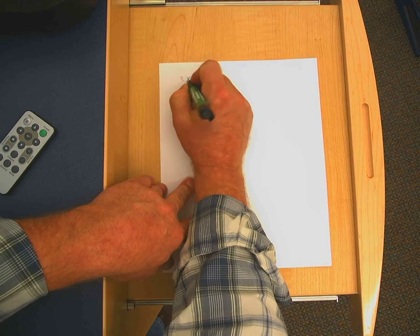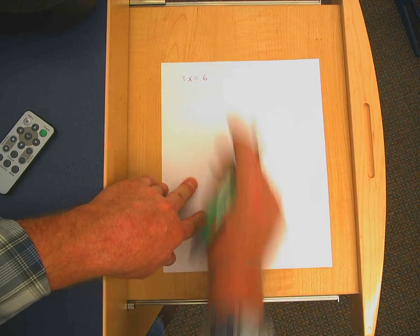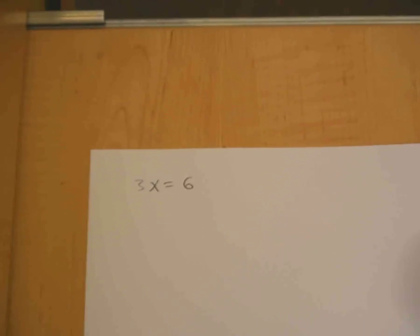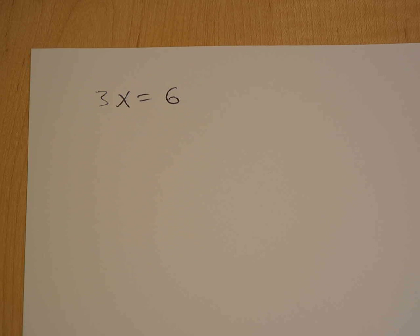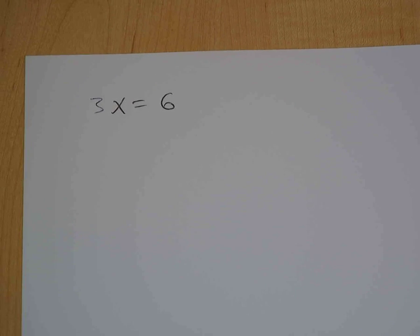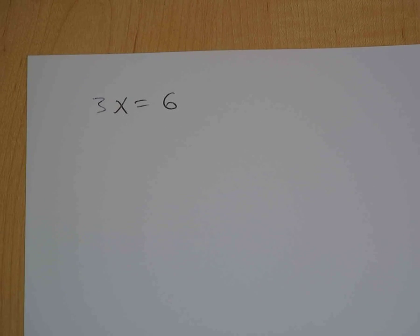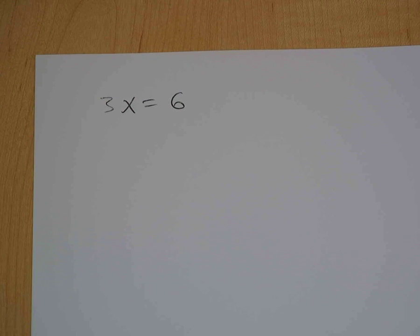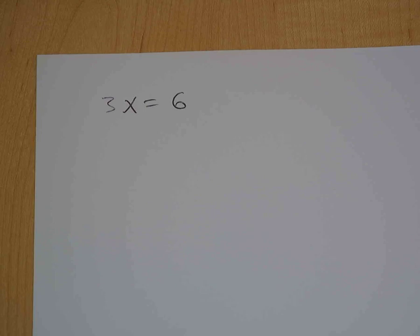Today we're going to learn how to solve simple algebraic equations. In this example we have 3 times x equaling 6. Mrs. Berry, how do we undo 3 times x?